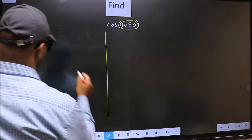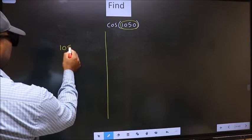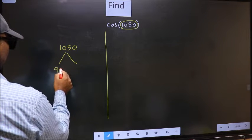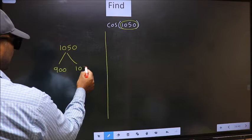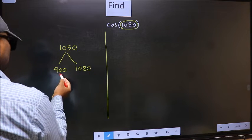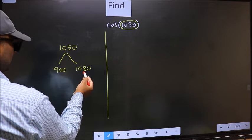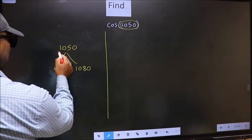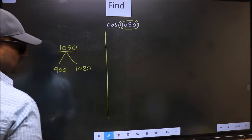What I mean is, 1050° lies between 900° and 1080°. This is 180 × 5, this is 180 × 6. Between these two numbers, 1050° lies.